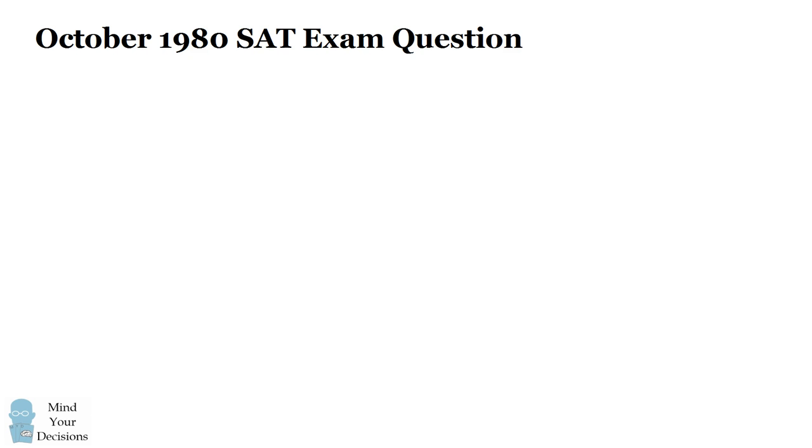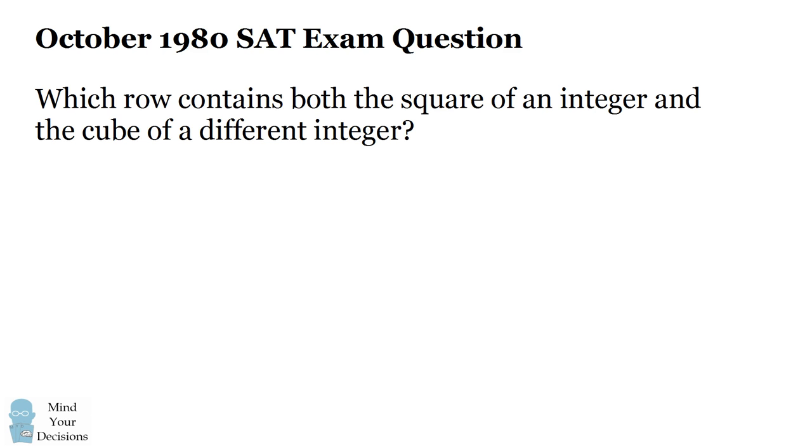Hi, this is Presh Talwalkar. The October 1980 SAT exam contained the following math question: Which row contains both the square of an integer and the cube of a different integer?